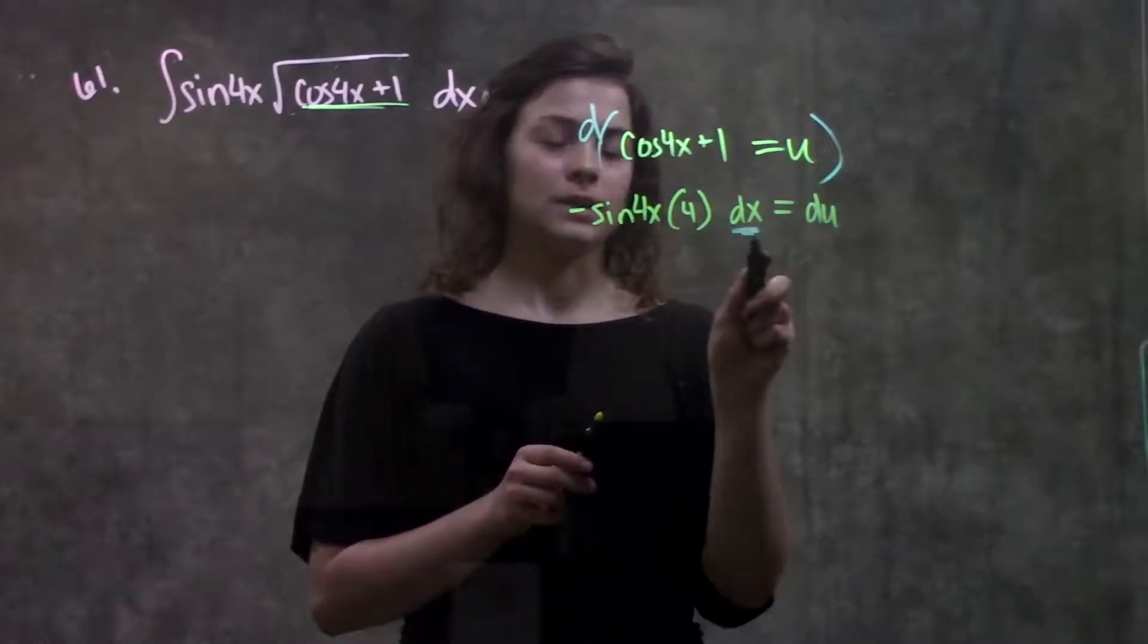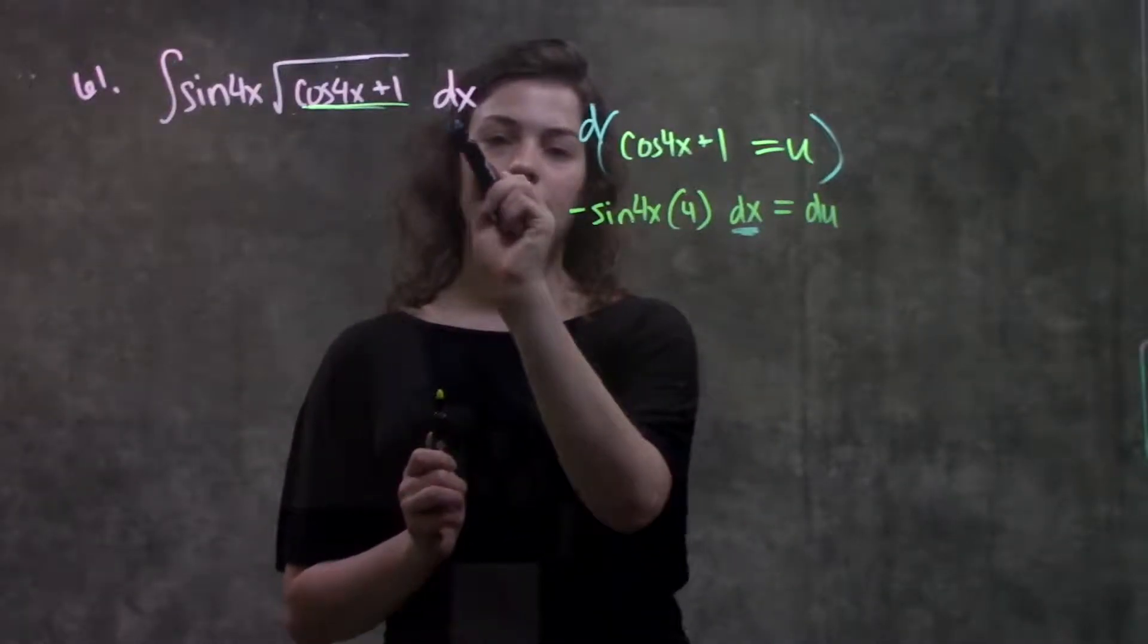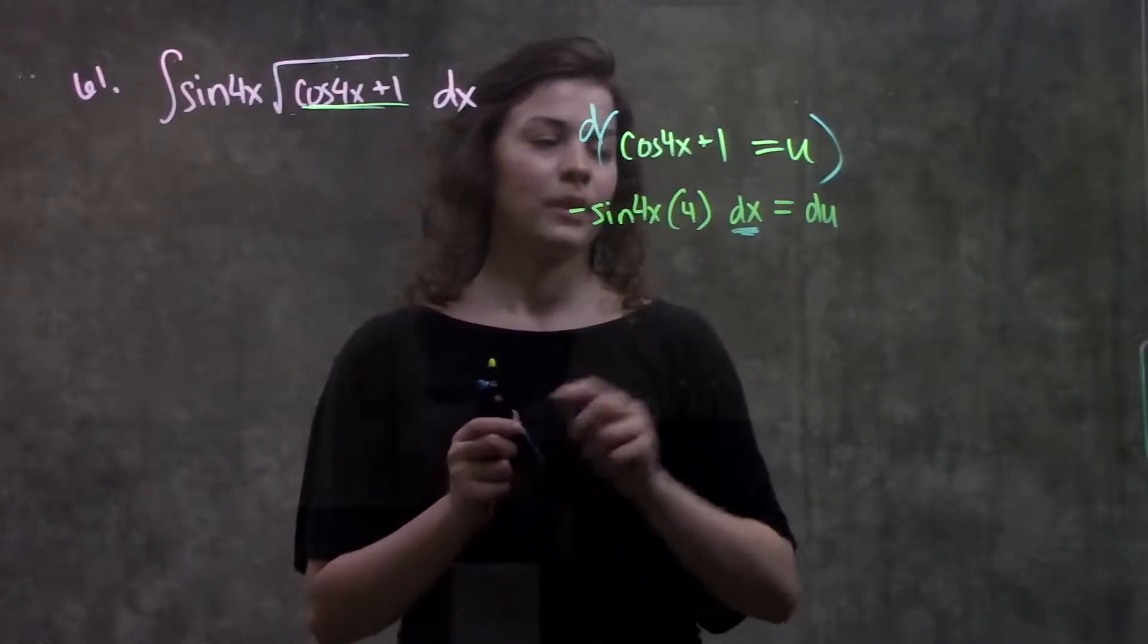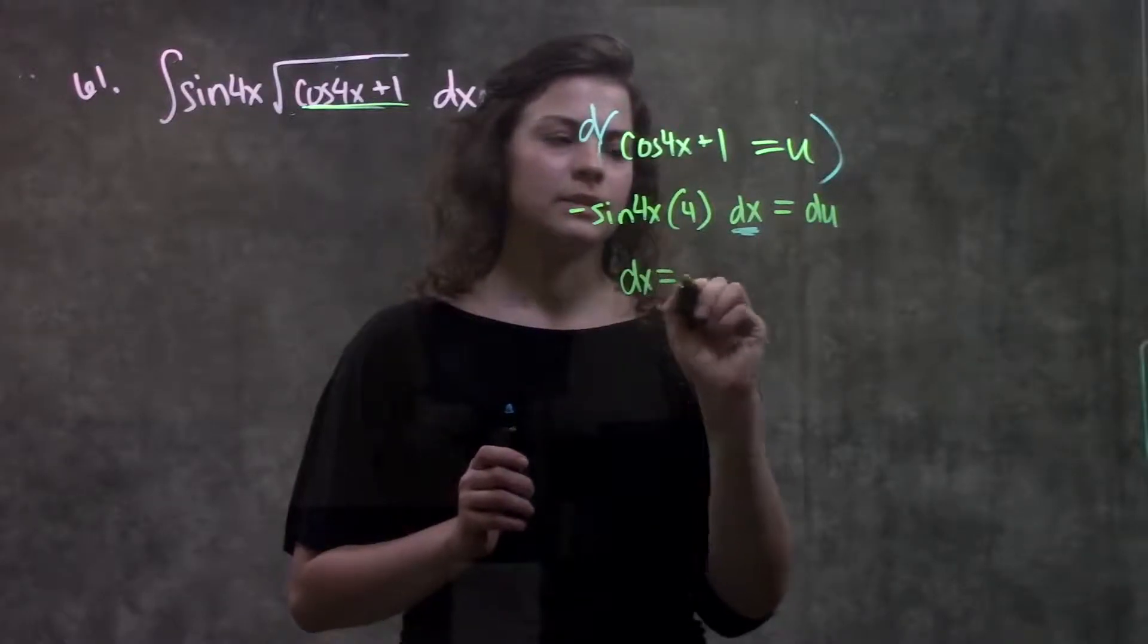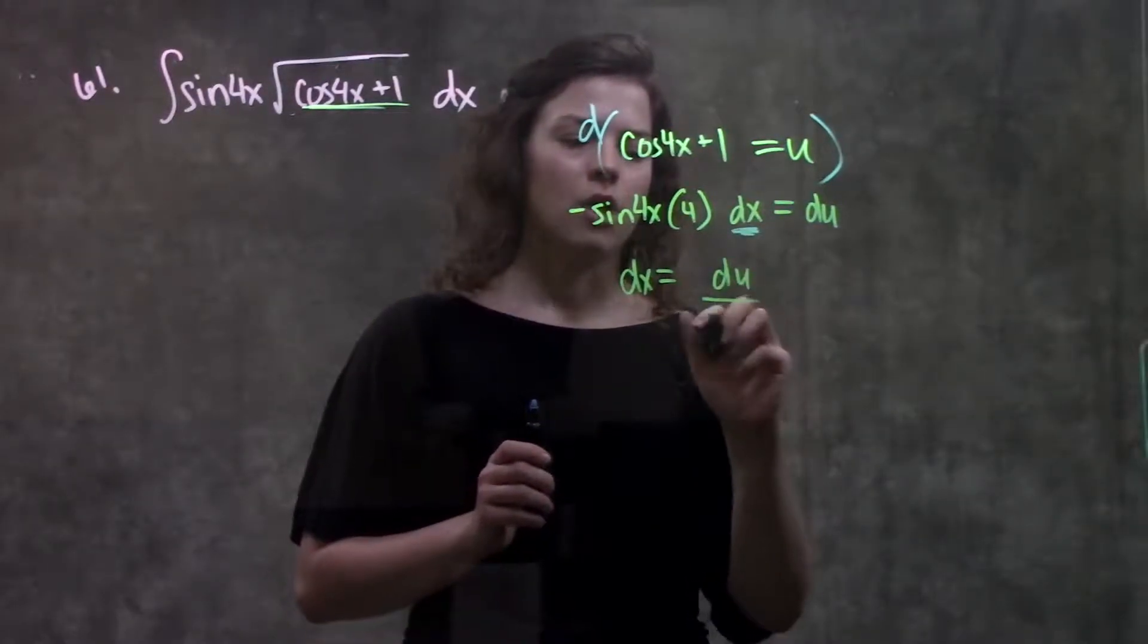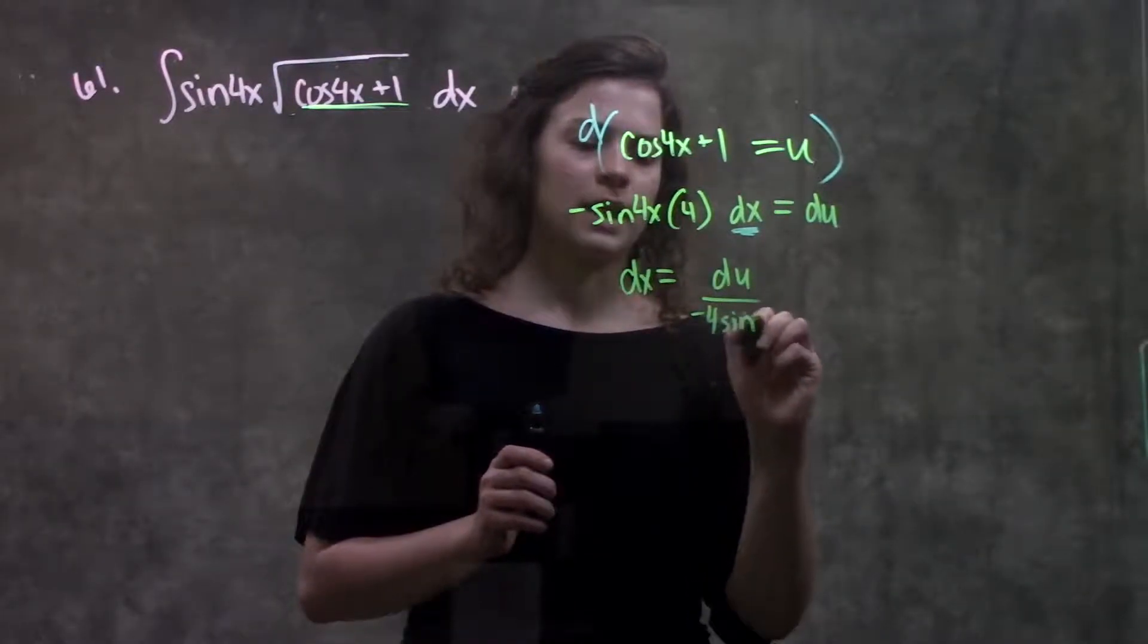Now I'm going to solve for this value dx so that I have something to plug back into my original function. Solving for dx, I just divide this over to the other side. I get that dx is equal to du over minus 4 sine 4x.